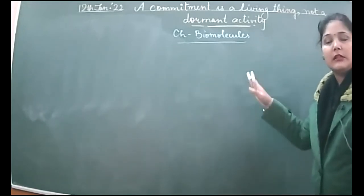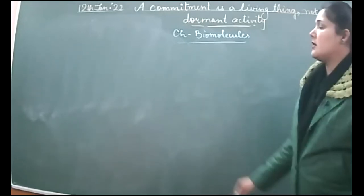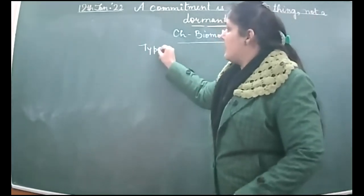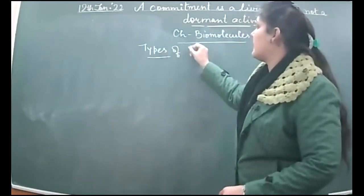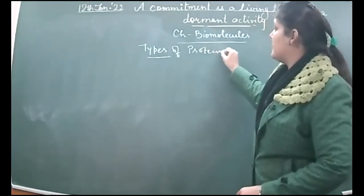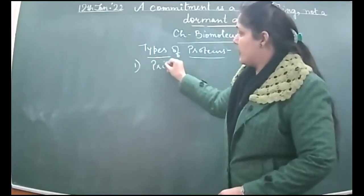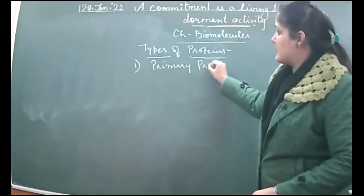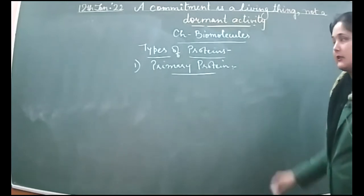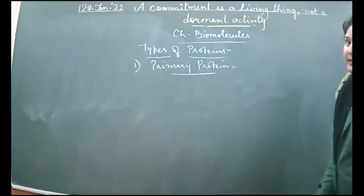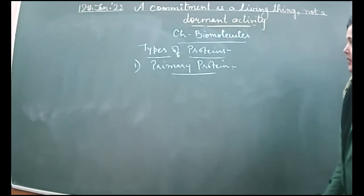We also started studying the various types of proteins depending upon their structure. There are four types of proteins. The first type depends on a linear arrangement of all the amino acids — that is the primary protein. On the left side of the chain is the N-terminal, and on the right side is the C-terminal, as discussed yesterday.